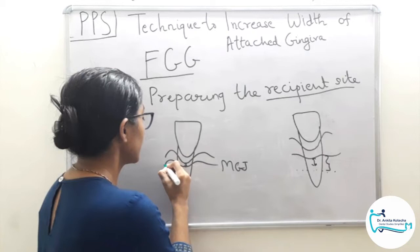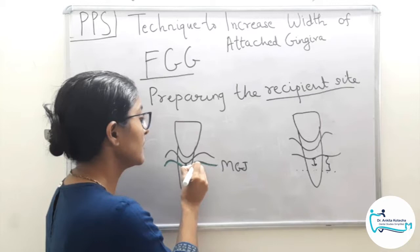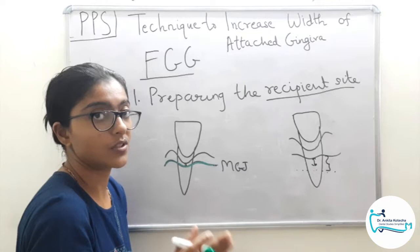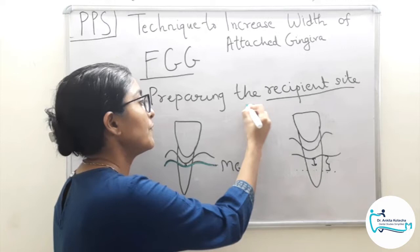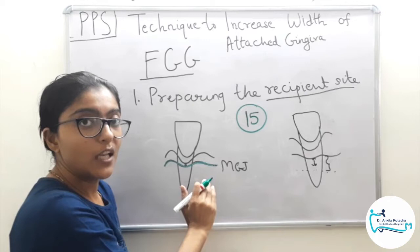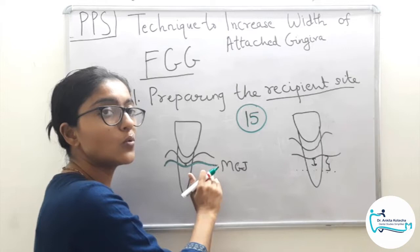The first and most commonly used combination is a single horizontal partial-thickness incision. This incision is given at or below the mucogingival junction, moving from distal to mesial, using a number 15 or 15C blade. Because it is loose alveolar mucosa, the tissue will retract easily.